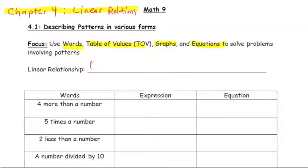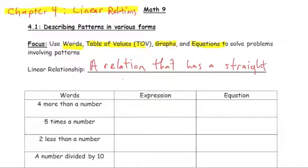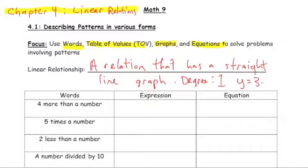A linear relationship is just a relation that has a straight line graph. The degree of a linear relationship is 1 — we talked about degree before, where we're looking at the biggest exponent on our variable. So if we have a linear relationship like 3x plus 4, the exponent on the x is 1. This is a first-degree polynomial which will give us a straight line graph.